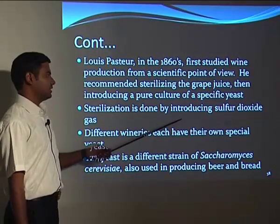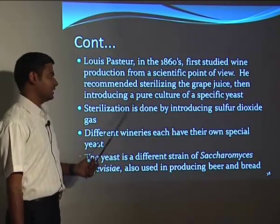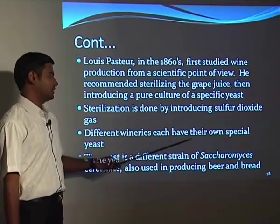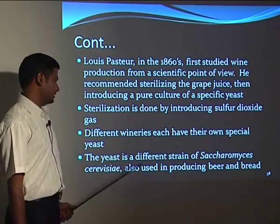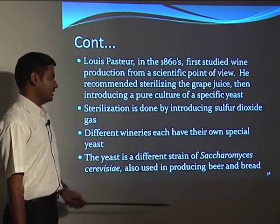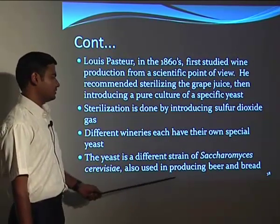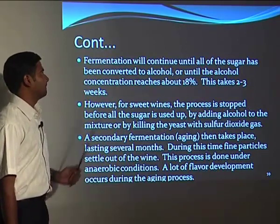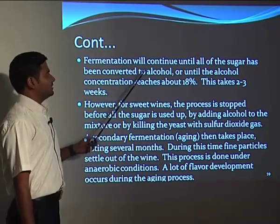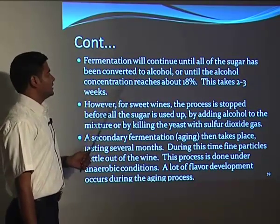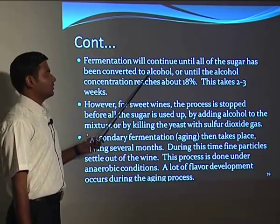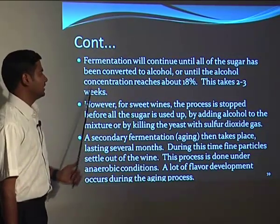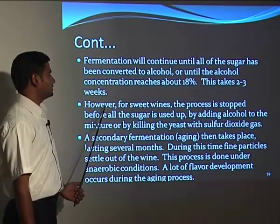Sterilization is done by introducing sulfur dioxide, which kills the bacteria. Different wineries each have their own special yeast — different strains of Saccharomyces cerevisiae, also used in the production of beer and bread. Fermentation continues until all the sugar has been converted to alcohol or until the alcohol concentration reaches about 18 percent, which takes around 2 to 3 weeks.